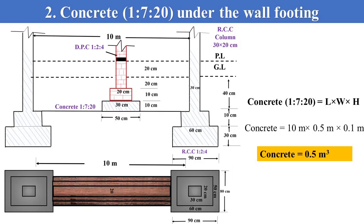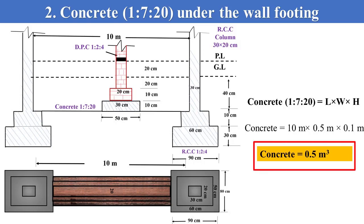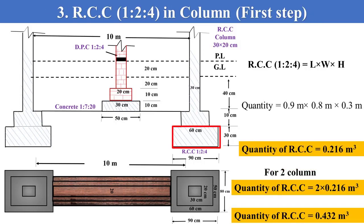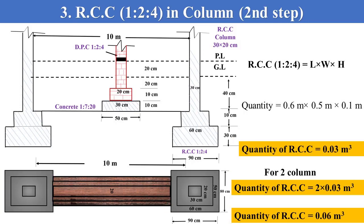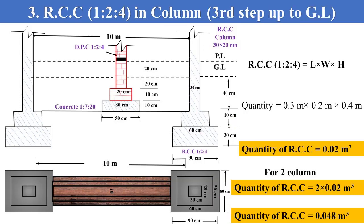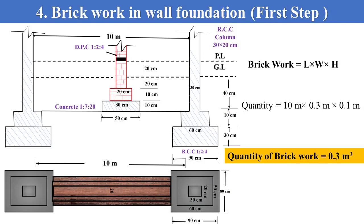For concrete 1:7:20 under the brickwork of the wall foundation, multiply the wall concrete length with width and thickness of concrete; the total concrete becomes 0.5 cubic meter. For RCC in the first strip of the column, multiply the first strip length with width and thickness, then multiply by 2 for two columns. Similarly, for the second step, multiply the step length, width, and thickness. For the third step, multiply the column length with width and count the height up to the ground level.